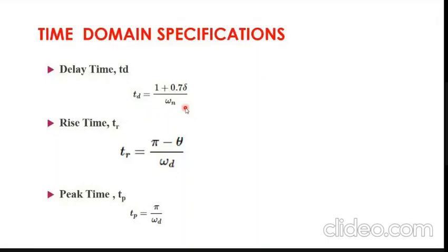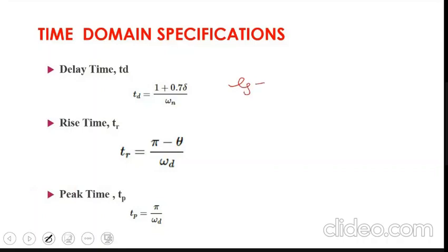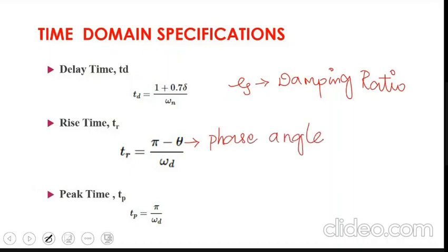The formula for delay time is: Td = (1 + 0.7·ψ) / ωn, where ψ is the damping ratio. The rise time formula is: Tr = (π − θ) / ωd, where ωd is the damped frequency and θ is the phase angle.